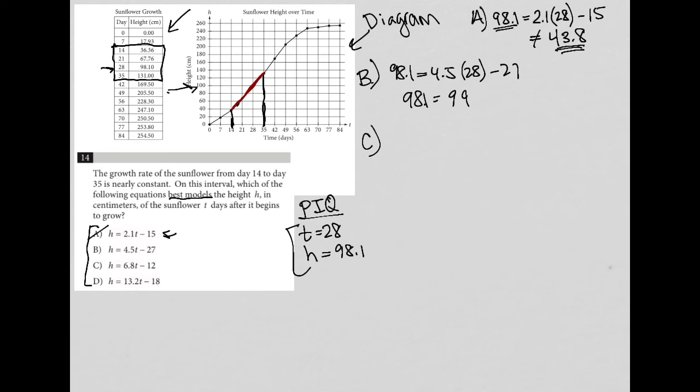Choice C would be 98.1 equals 6.8 times 28 minus 12. I calculate 6.8 times 28 and then minus 12. What I get is 178.4. That's definitely not equal and nowhere close, so C is gone.